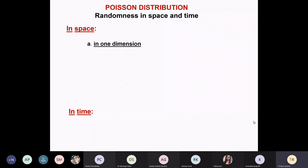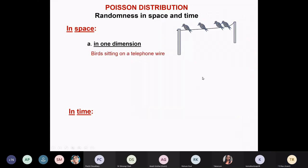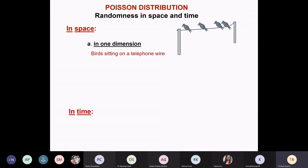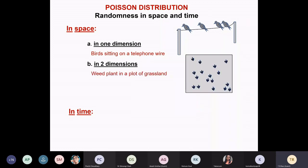I could come up with something like this: birds sitting on a telephone wire. You can ask if their positions are random or not. That's one example in one dimension. It could be in two dimensions — that's easy to think of. You can think of a tract of forest area and look at the weeds in the grassland: are they distributed randomly or in some other fashion?